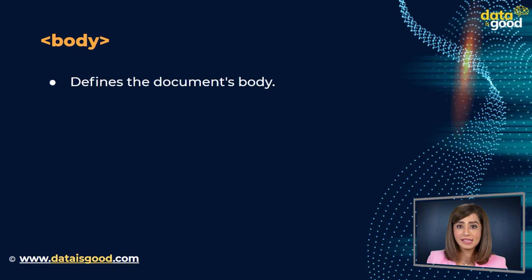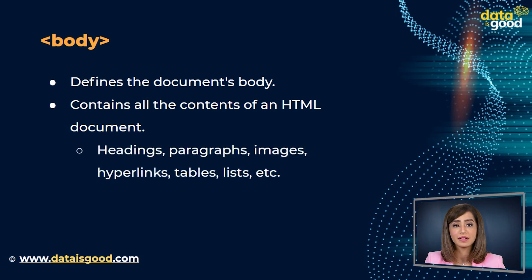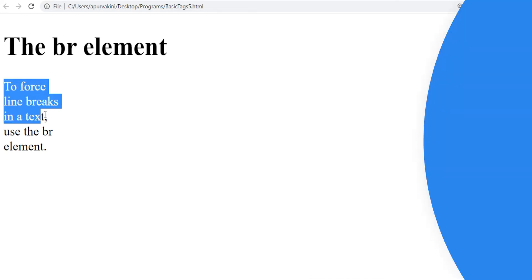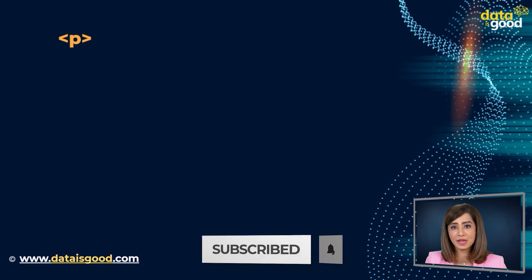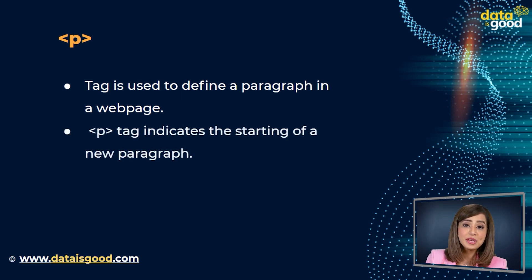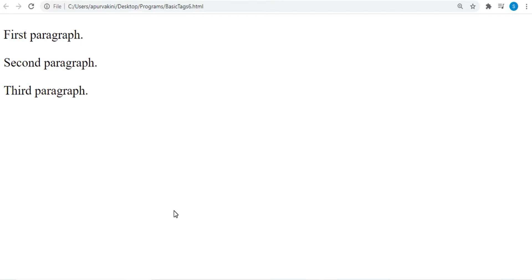Then we have the body tag. The body tag defines the document's body. The body element contains all the contents of an HTML document, such as headings, paragraphs, images, hyperlinks, tables, lists, etc. After saving this file we can see the output of the body tag. Now we have the P tag — the HTML paragraph tag — which is used to define a paragraph in a web page. An HTML P tag indicates the starting of a new paragraph. After saving, we can see the output of the paragraph tag.